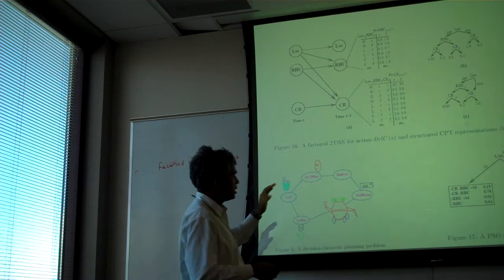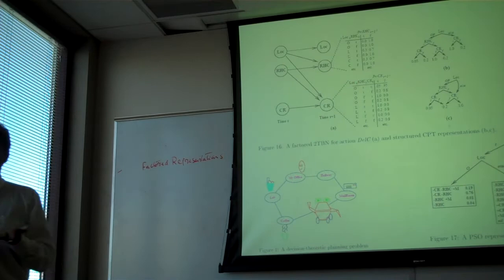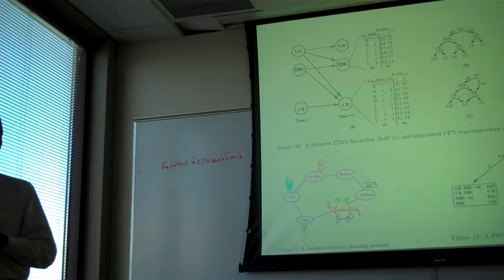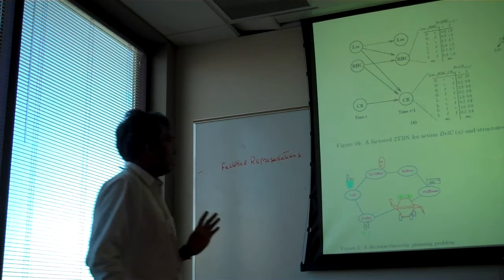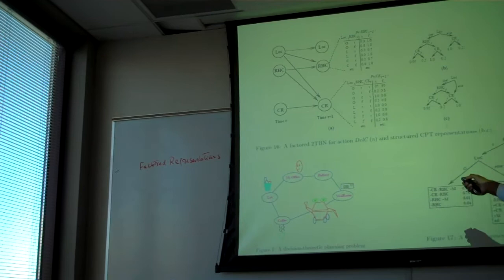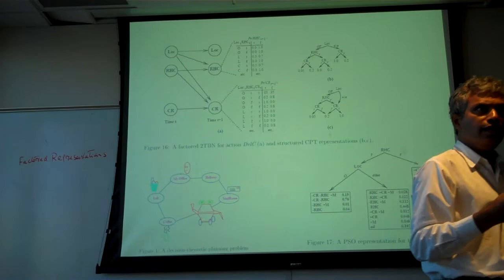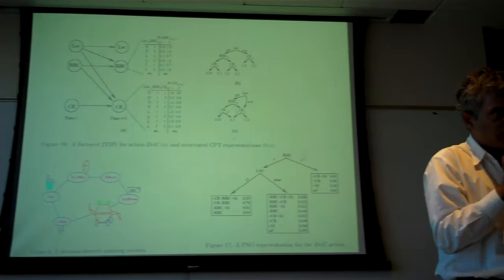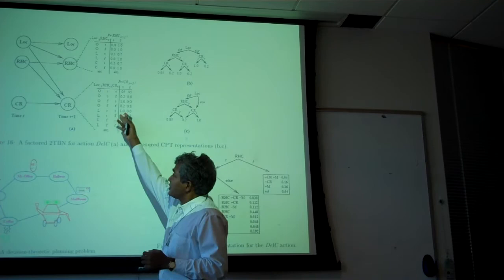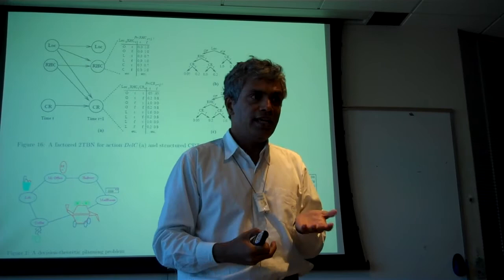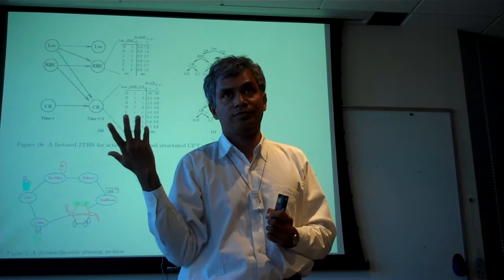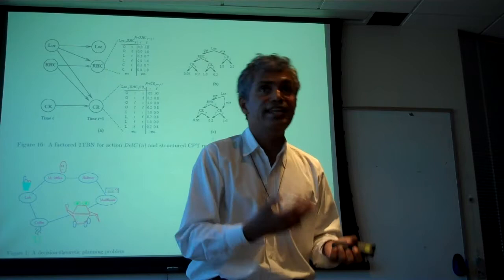Specifying the deliver coffee action means specifying the network topology and the CPTs. The CPTs are written in tabular form, but they can be compressed using ADDs — algebraic decision diagrams. An ADD represents the CPT as a structured diagram: for example, starting with location, if location is office, check robot has coffee, then check coffee request, and assign probabilities at the leaves.